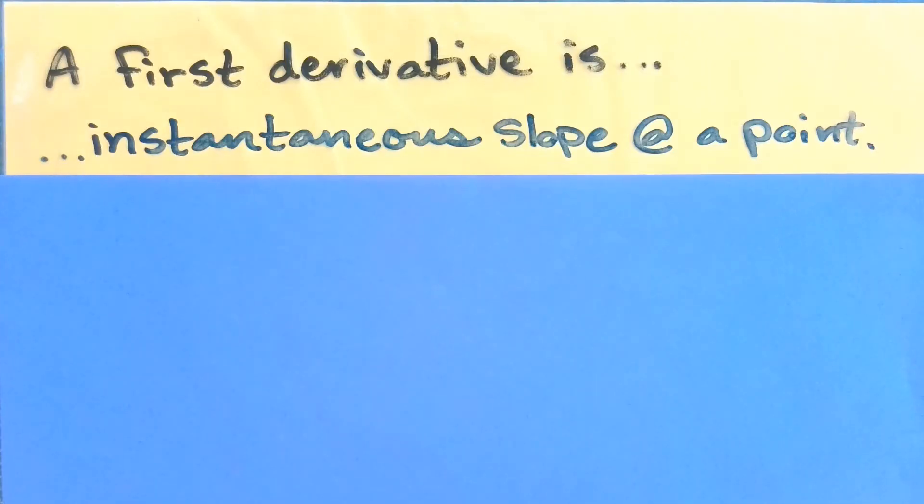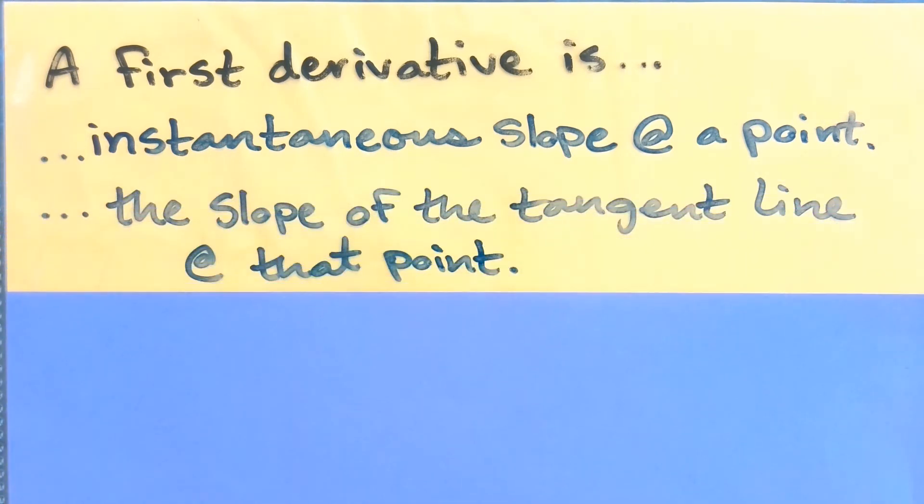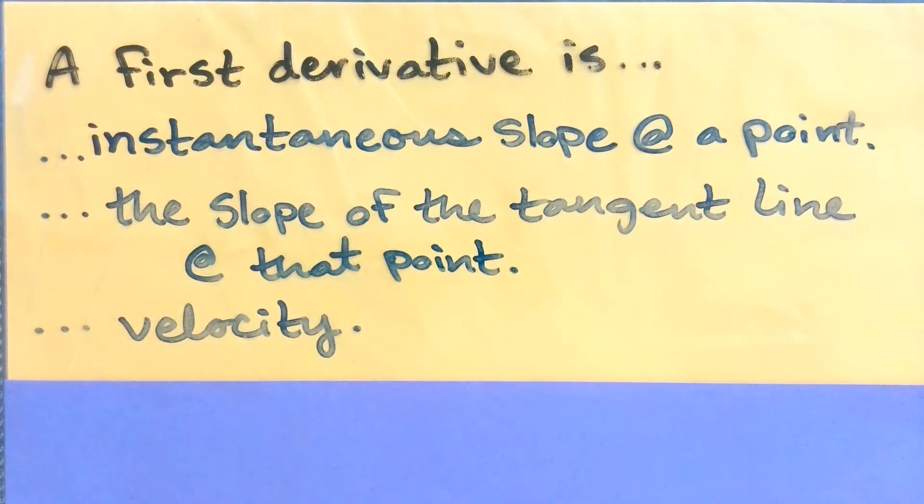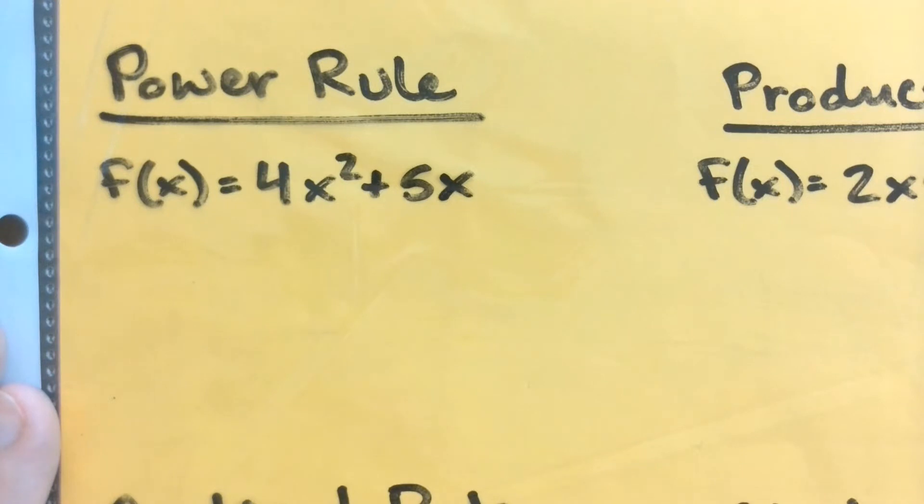Some other things that we want to remember about a first derivative is that it is instantaneous slope at a point. It is also the slope of the tangent line at that point. And then if we're talking about position, it is velocity. I know I've used each of these rules throughout calculus, but I just want to give a quick example of each one.